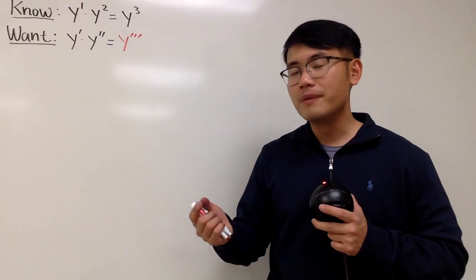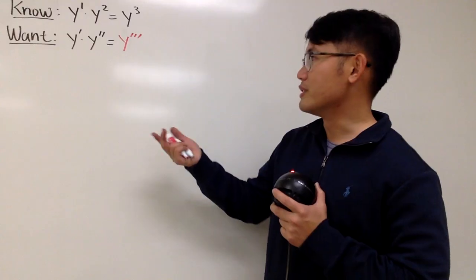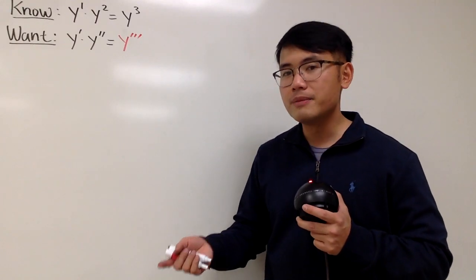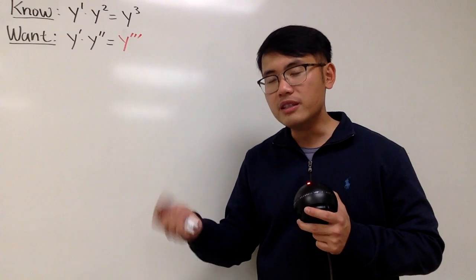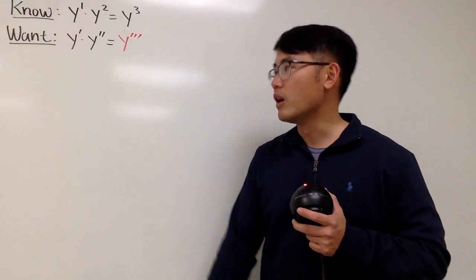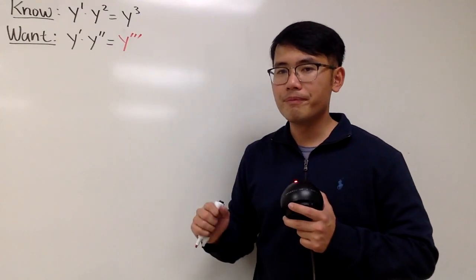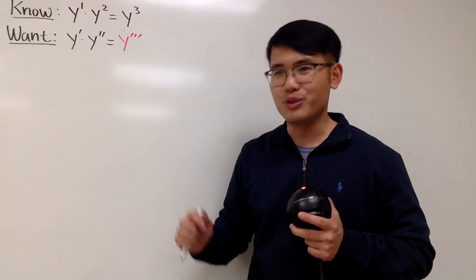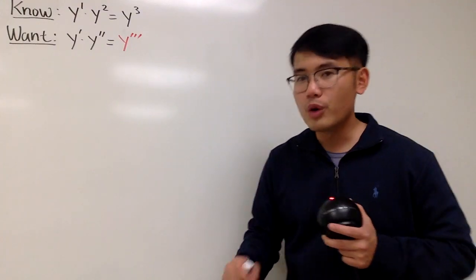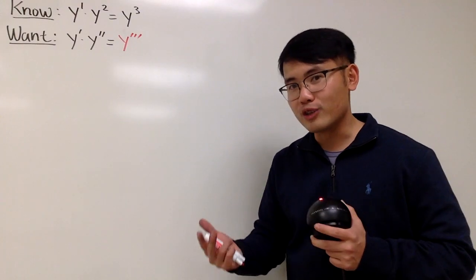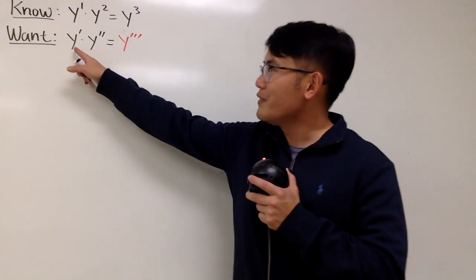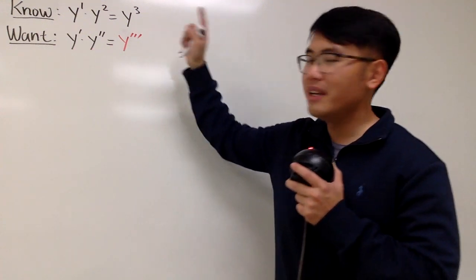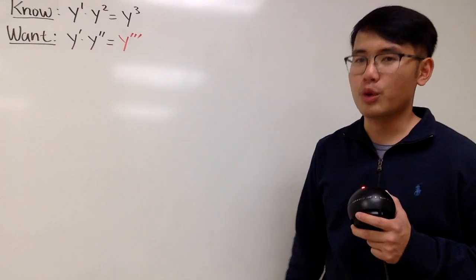Because the linear function, which is like y equals mx plus b, if you differentiate that twice, the second derivative is 0, and the third derivative is also 0, and you end up with 0 equals 0. That's kind of cool, but it's kind of boring — it's kind of trivial. So in this video, we're going to find out more functions so that their first derivative times their second derivative will be their third derivative.